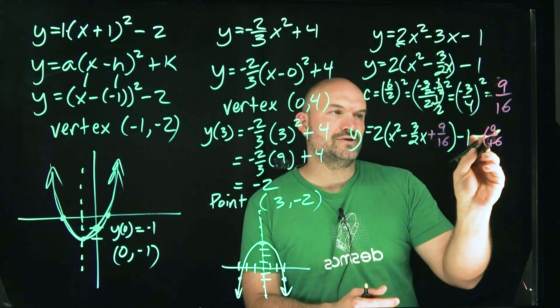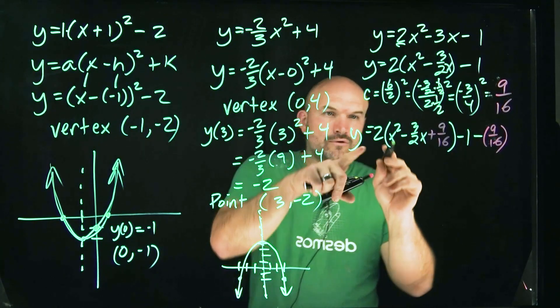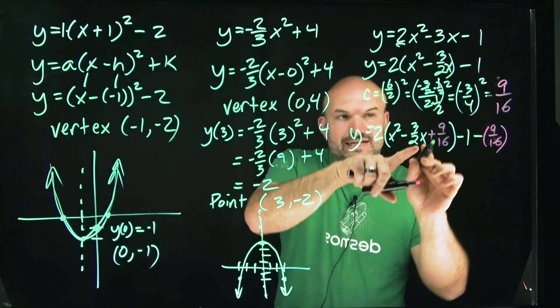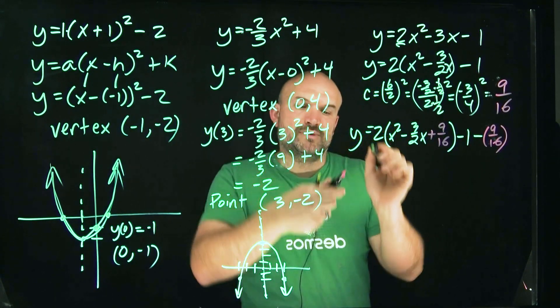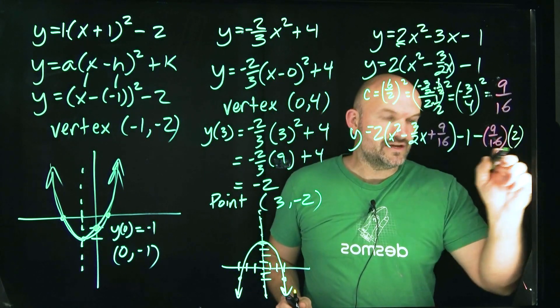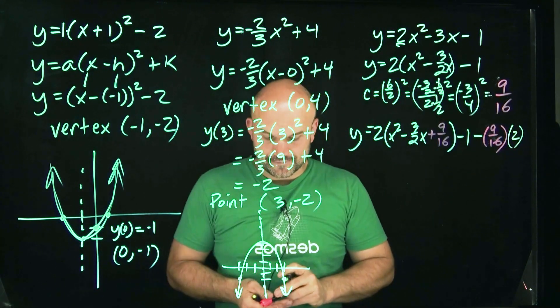And then I'm going to minus 1, and then minus 9 over 16. Because I added here, so I have to subtract it. And then here's the important thing. Remember, this is actually not 9 over 16. This is 9 over 16 that's been multiplied by 2. So that means I need to multiply this 9 over 16 by 2 as well.